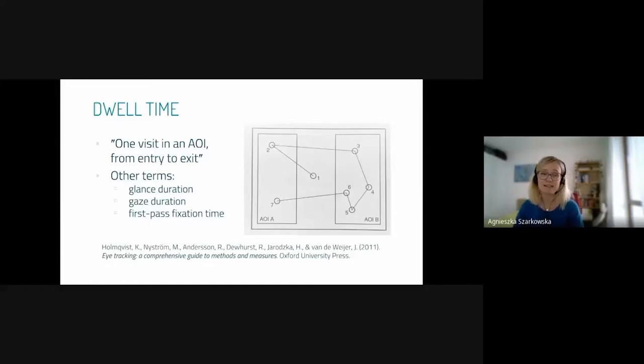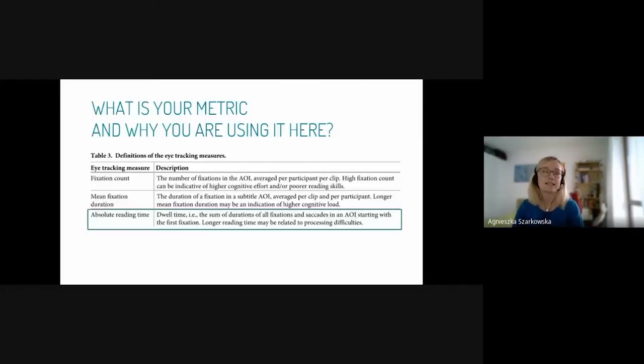Some people use the terms glance duration or gaze duration or first pass fixation time instead of dwell time. That really depends. So it's crucial that in your study, in your paper when you report it, you state clearly what is it that you measure, what is your metric, and why are you using it in the first place. For instance, here I'm showing an example of an absolute reading time measure, defined as the sum of durations of fixations and saccades in an area of interest. Then I explain why this measure might be useful in my study, because longer reading time may be related to some processing difficulties.